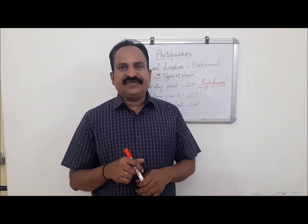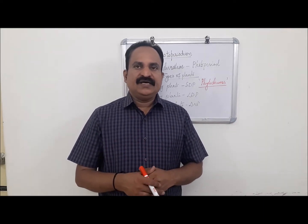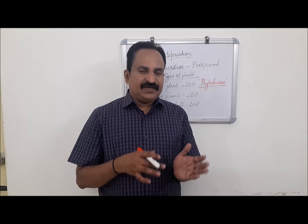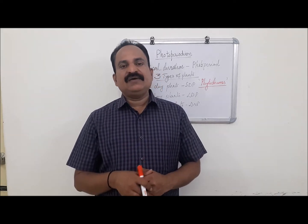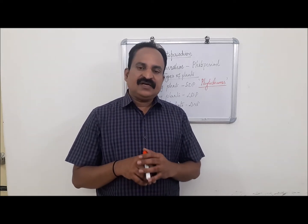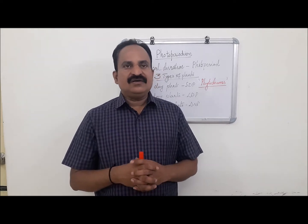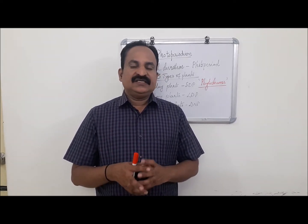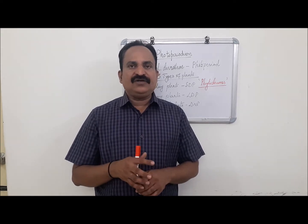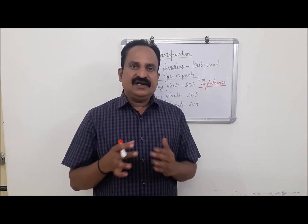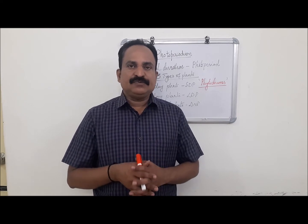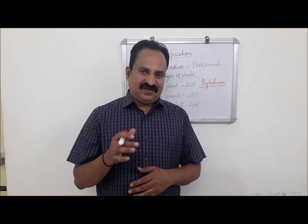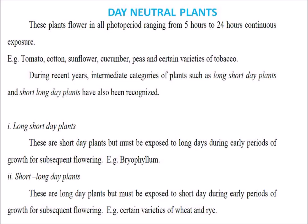Day neutral plants are those whose flowering is not affected by photo period. These plants flower after a period of vegetative growth. Examples include cucumber, sunflower, tomato, corn, chili, pea, and cotton. The site of perception of light or dark duration are the leaves. A hormonal substance is responsible for inducing flowering. Day neutral plants flower in any photo period ranging from 5 hours to 24 hours of continuous exposure.